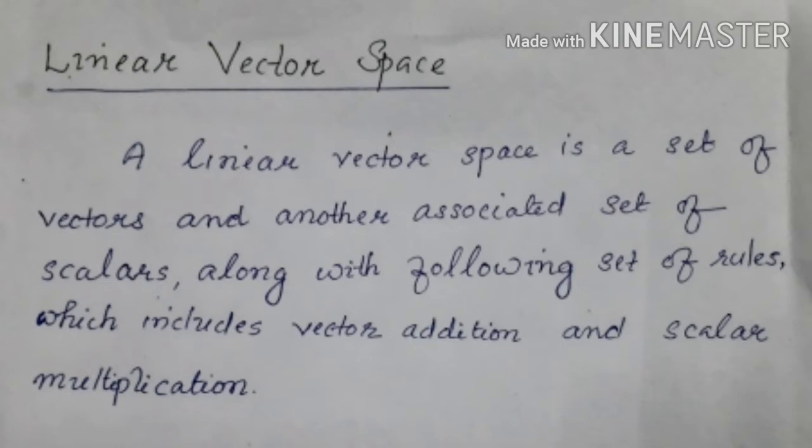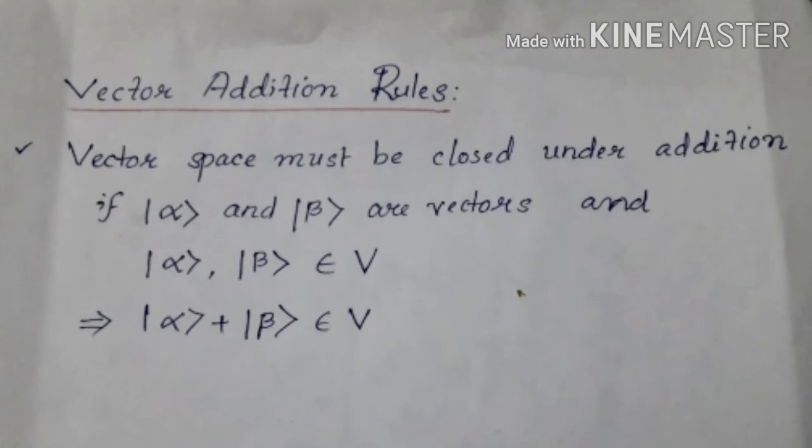Rules are explained using different notations. We can use the standard notation: ket. Vector space must be closed under addition — that is, if ket vector alpha and ket vector beta are vectors belonging to vector space V, then ket vector alpha plus ket vector beta is also an element of V.